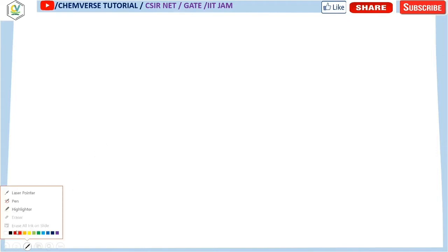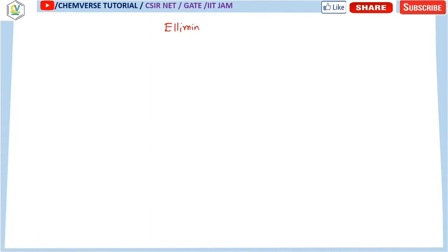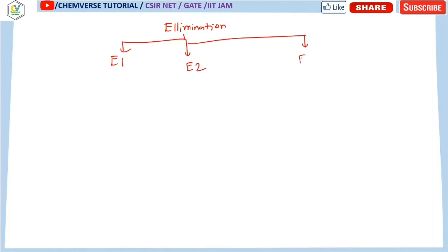Now I'm going to start with the basic mechanisms of elimination reactions. Elimination reactions are of mainly three types: E1 elimination, E2 elimination, and E1cb elimination. We will discuss each one by one.